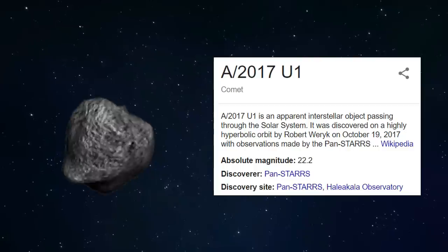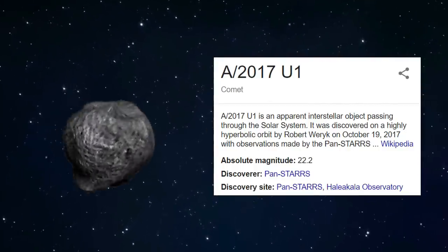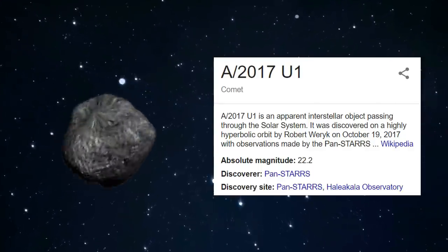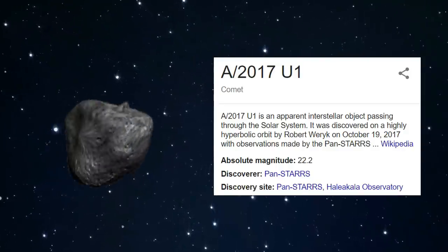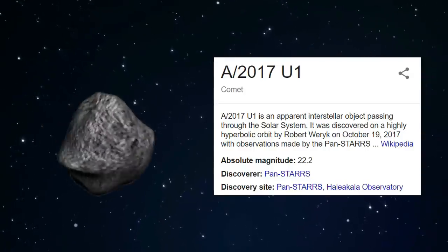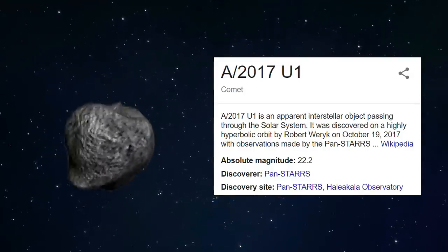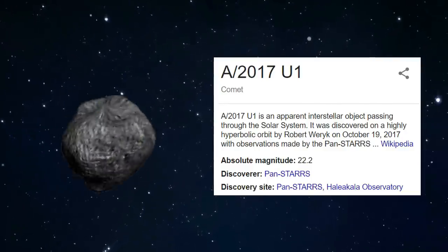They first called it a comet when they found it October 19, 2017, but reclassed it to an asteroid a week later. It came really close to earth, only 60 times the distance between the earth and the moon. Do you know what that means? If we use the cited speed when we found it, 46 kilometers per second, it could reach us in 145 hours. That is six days.